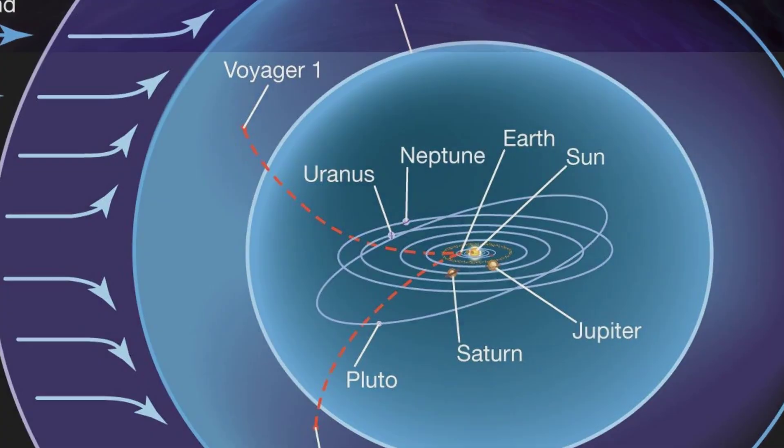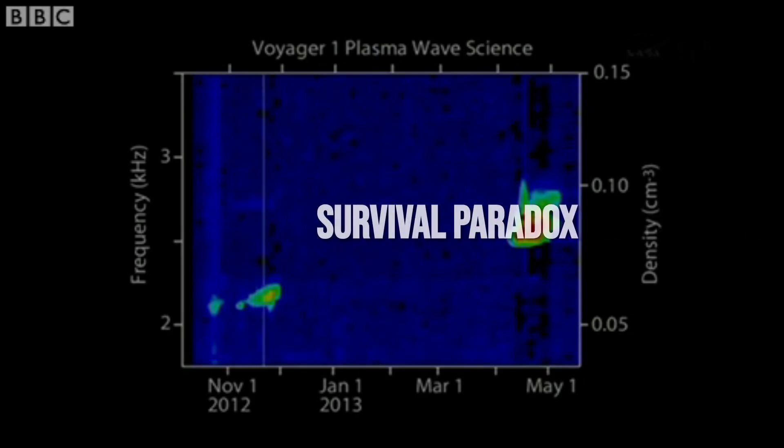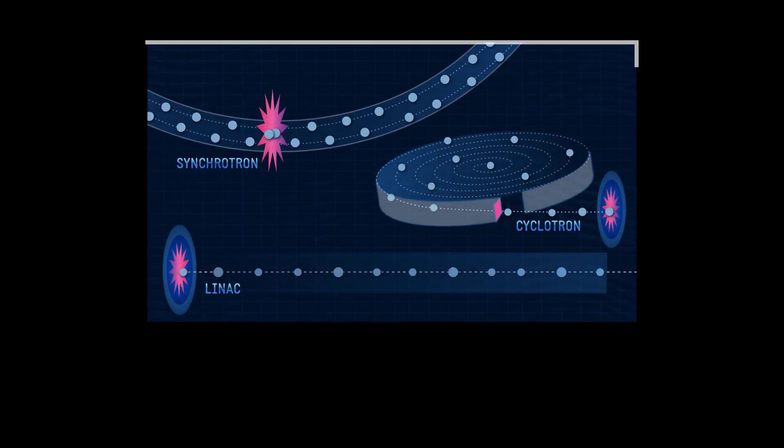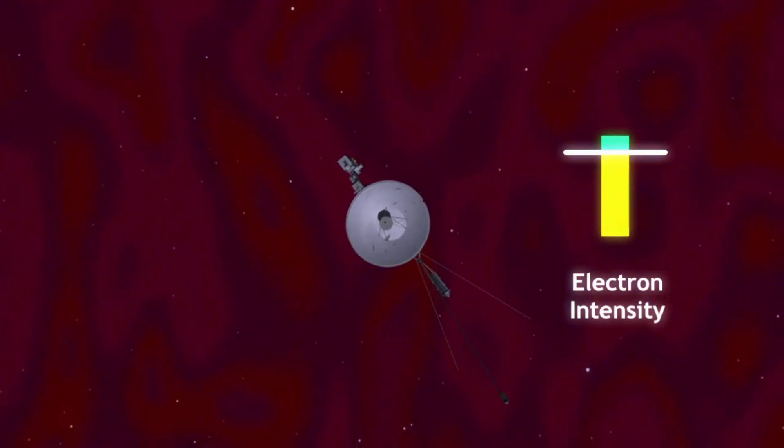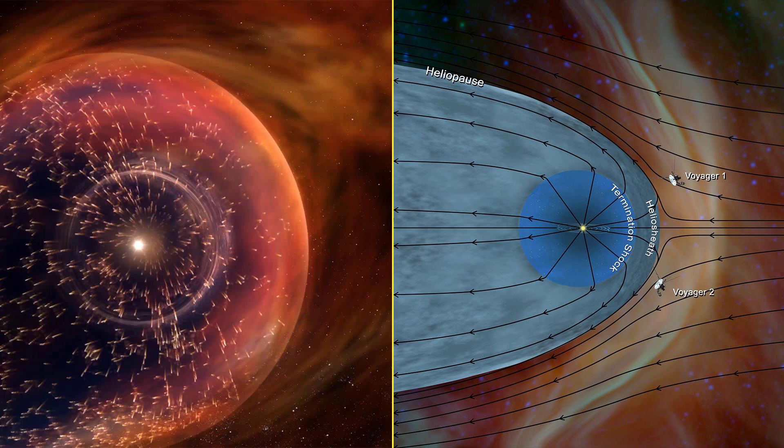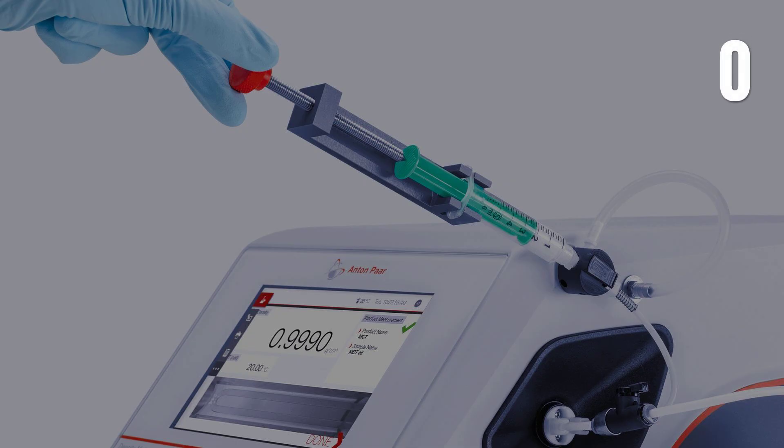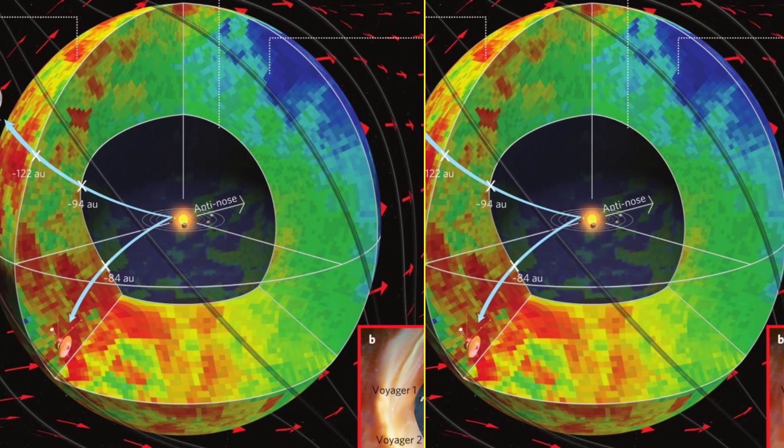A spacecraft passing through an environment measured at 90,000 degrees Fahrenheit should have been vaporized in an instant, but the numbers from Voyager told a different story, a paradox at the heart of deep space physics. Out here, temperature means the speed of particles, not the sensation of heat. The plasma at the Heliopause is so rarefied that even at blistering speeds, there are simply too few particles to transfer energy to the spacecraft. In practical terms, the density is lower than the best laboratory vacuums on Earth, less than a hundredth of a particle per cubic centimeter. The result is a region that is, by any earthly standard, both impossibly hot and impossibly empty.